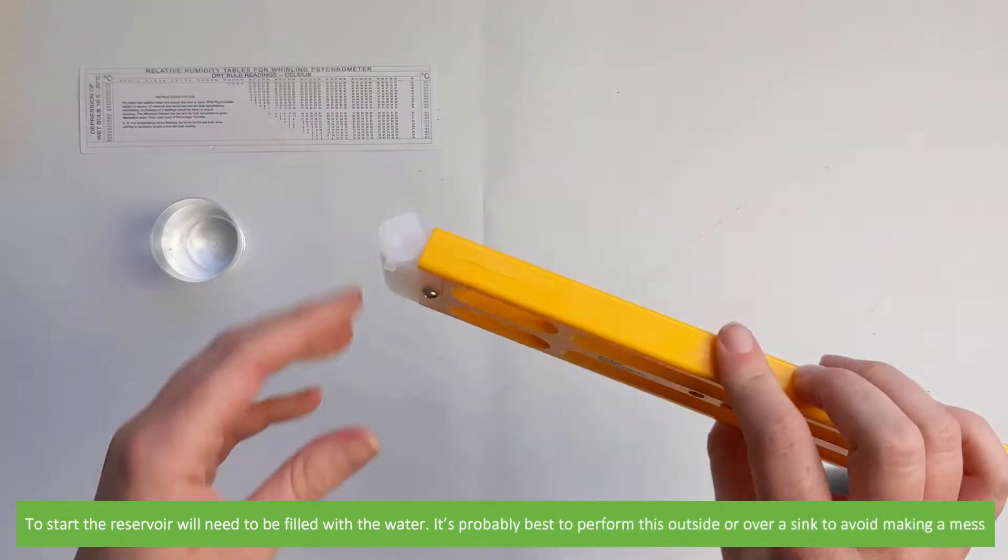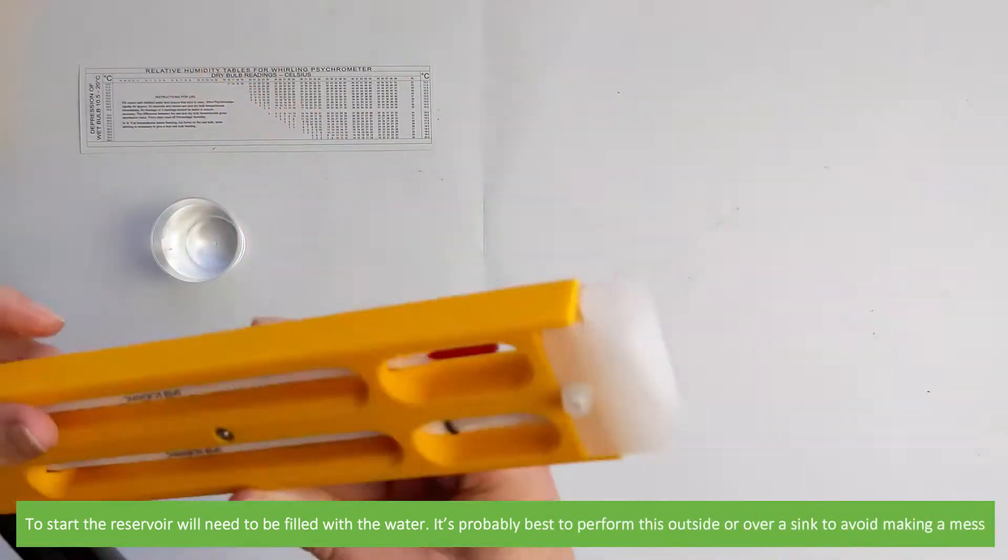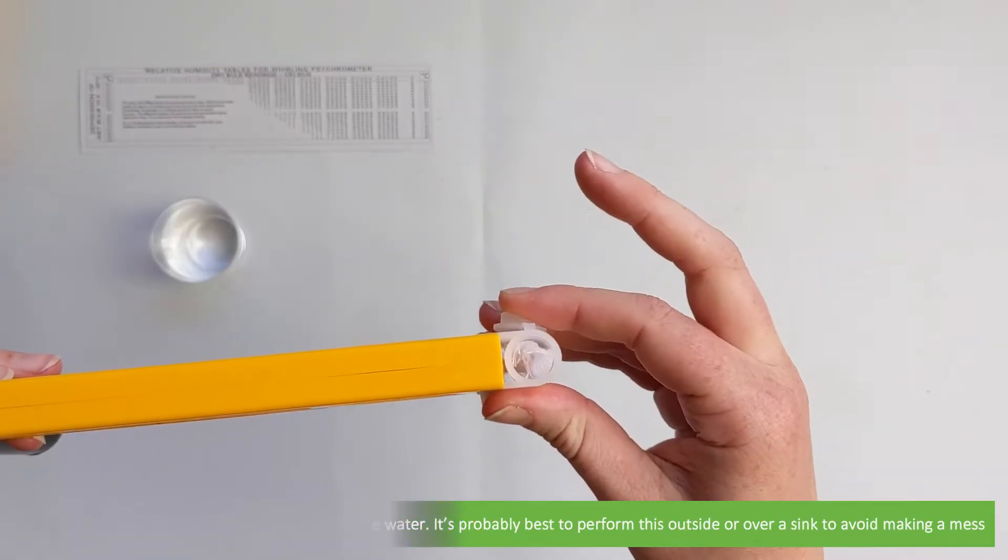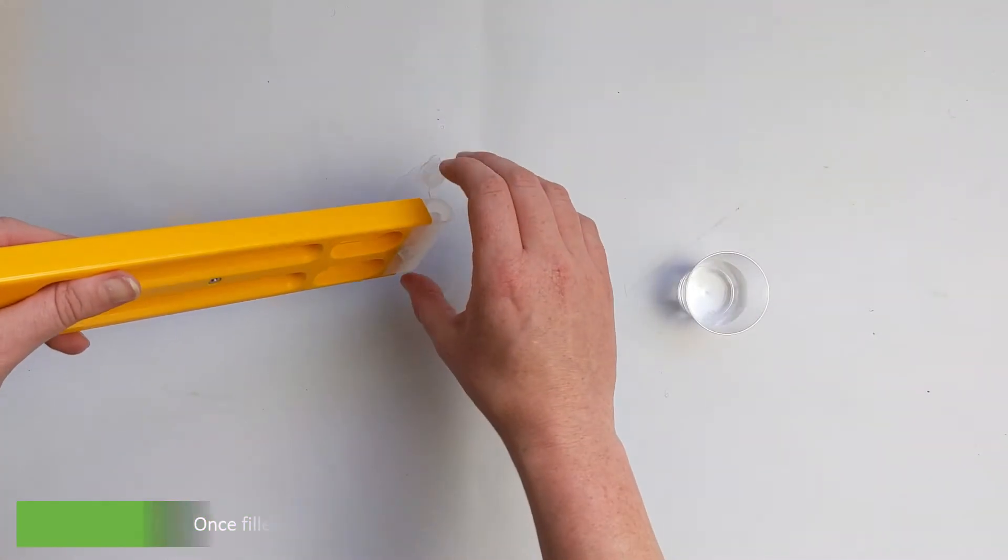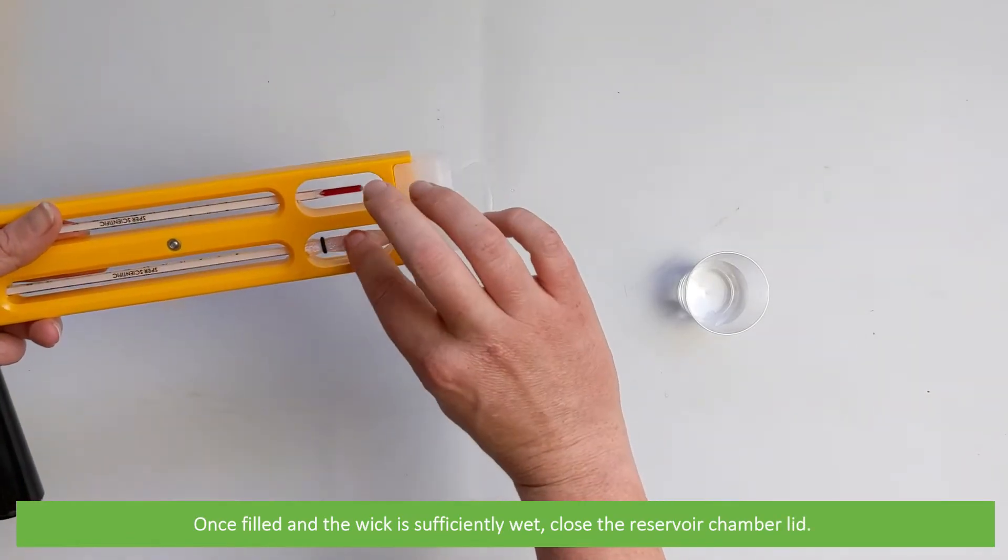To start, the reservoir will need to be filled with water. It's probably best to perform this outside or over a sink to avoid making a mess. Once filled and the wick is sufficiently wet, close the reservoir chamber lid.